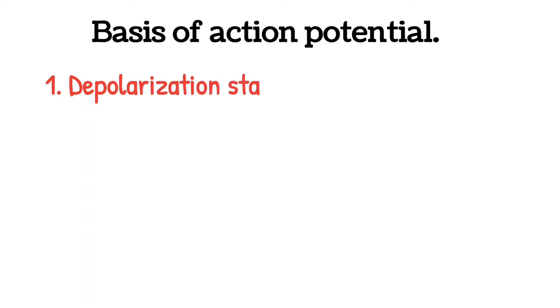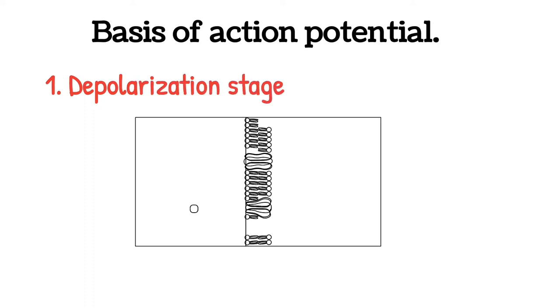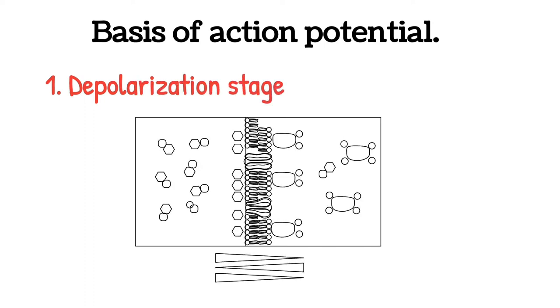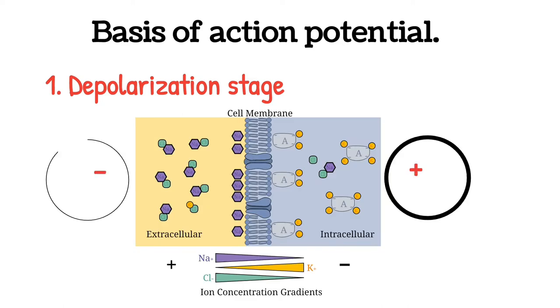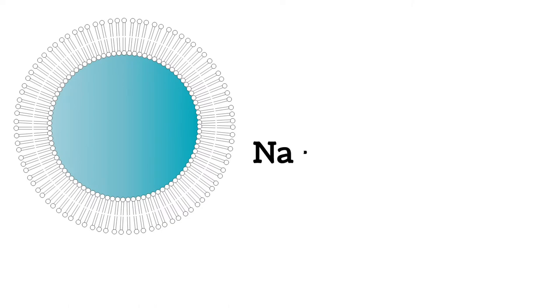Phases of action potential. Depolarization stage is the initial phase of action potential in which inside of the cell becomes positive and outside becomes negative. At this time, the membrane suddenly becomes permeable to sodium ions.